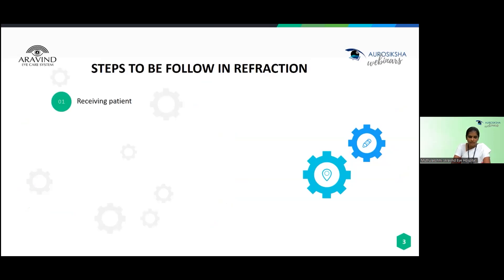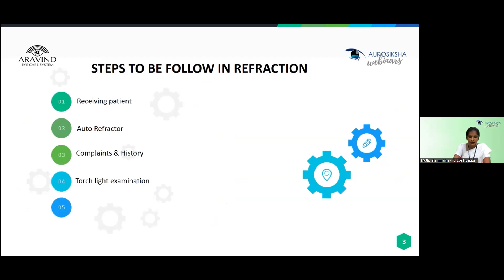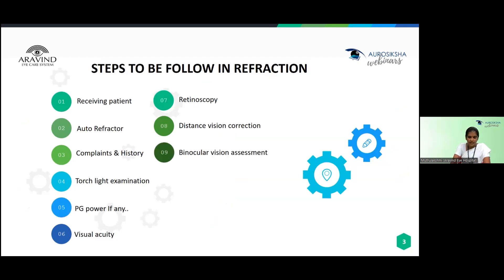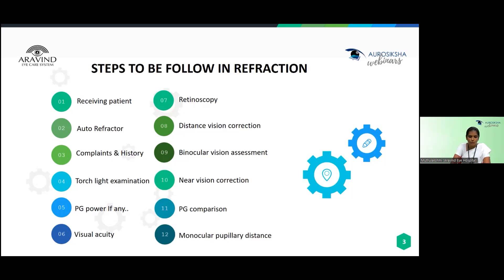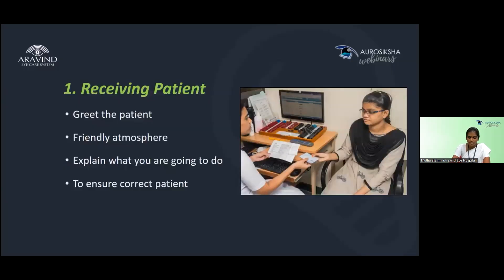The 13 steps are: (1) receiving the patient, (2) auto refractor, (3) complaints and history, (4) torchlight examination, (5) present glass power, (6) visual acuity examination, (7) retinoscopy, (8) distance vision correction, (9) binocular vision assessment, (10) near vision correction, (11) PG comparison, (12) monocular pupillary distance, and (13) spectacle counseling. Apart from the common objective and subjective refraction steps, we must follow all 13 to do a good refraction.